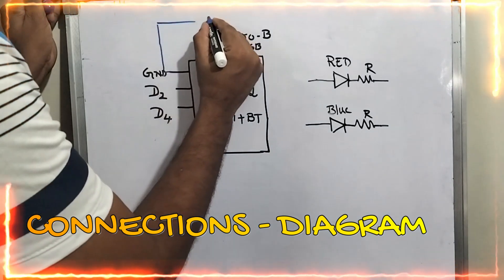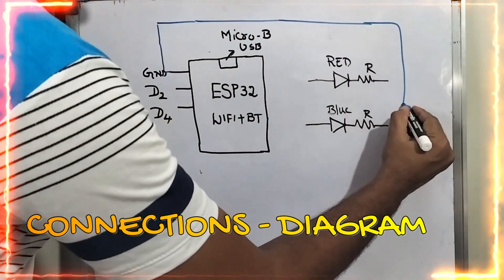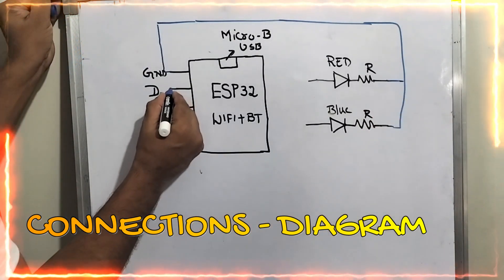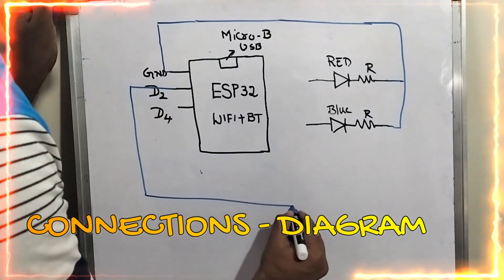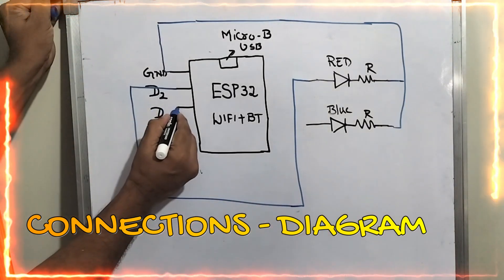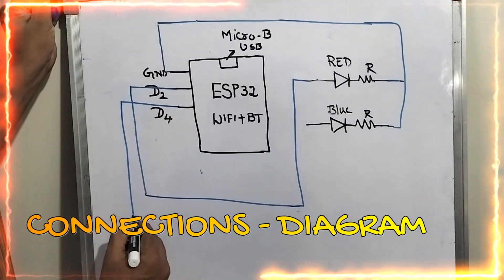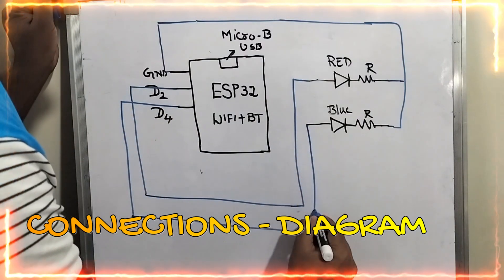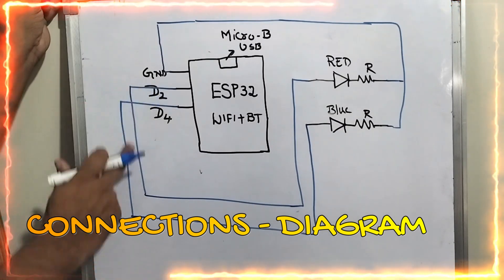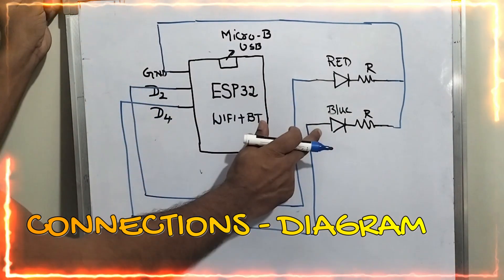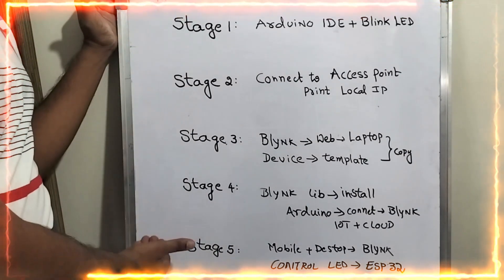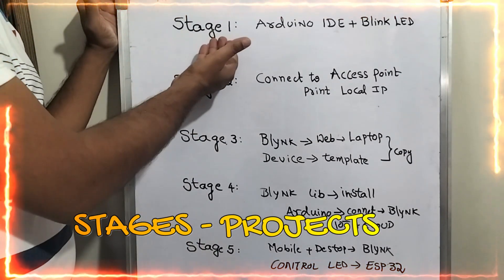I am taking a wire from ground and connecting it to the resistors of the red LED and blue LED. Now I am connecting D2 to the red LED, and taking the connection from D4 to the blue LED. So this is the connection diagram: D2 to red LED, D4 to blue LED, each with a resistor connected to ground.